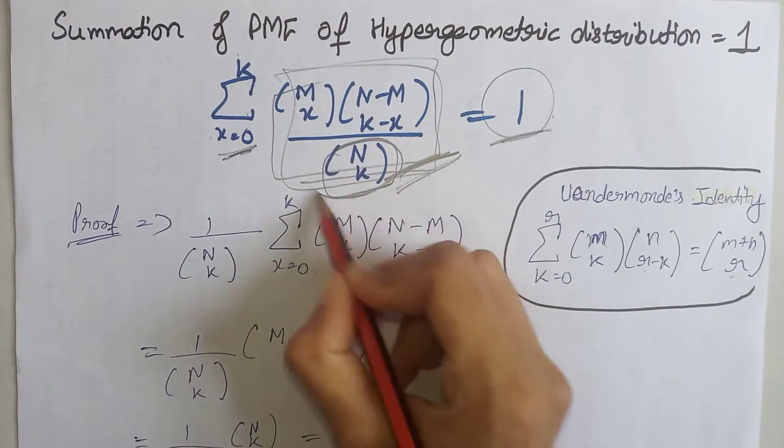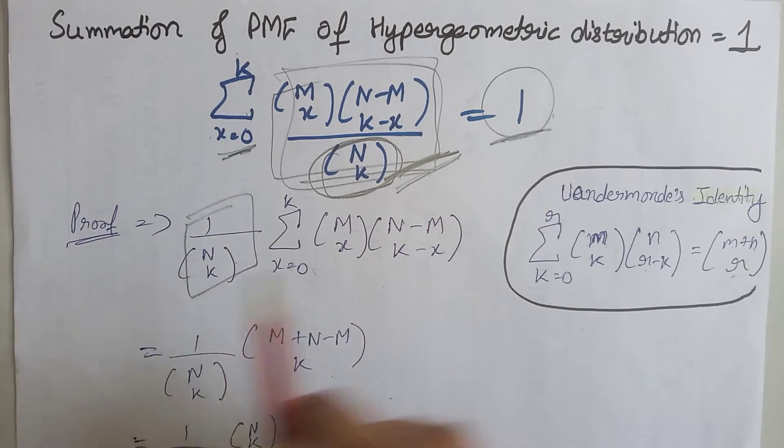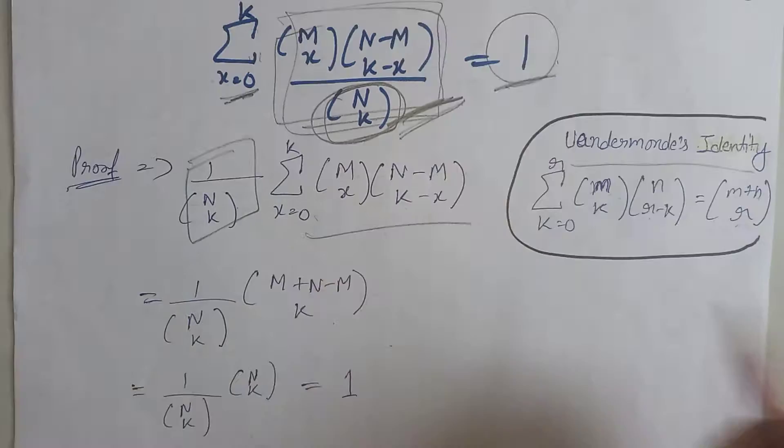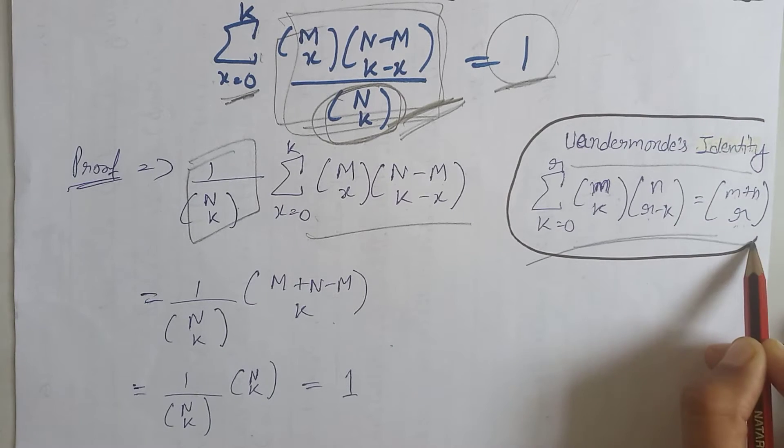Firstly, we will take this constant term outside the summation because this term does not contain x. Next, we also know Vandermonde's identity is this one.